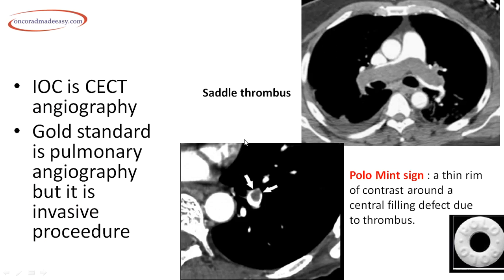On CT, the investigation of choice is contrast-enhanced CT angiography; the gold standard is pulmonary angiography, which is invasive. CT angiography shows a large thrombus in the main pulmonary artery extending into both right and left pulmonary arteries — this is a saddle thrombus. On axial CT, an intraluminal thrombus with a crescent of contrast around it gives the polo mint sign. Key findings: saddle thrombus extending into both pulmonary arteries, and polo mint sign.